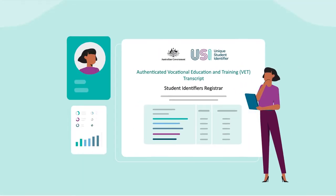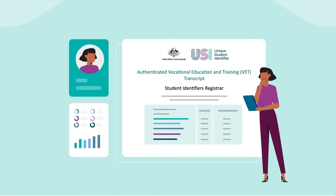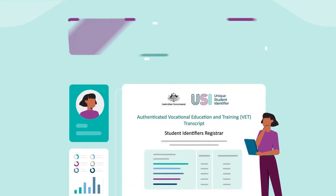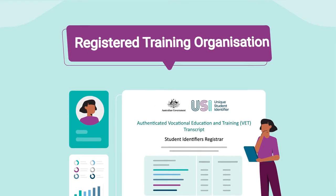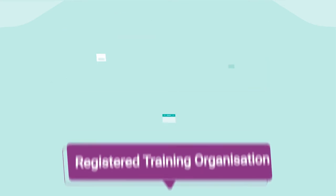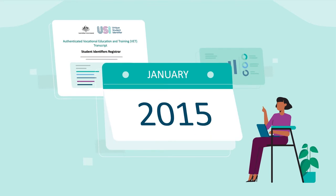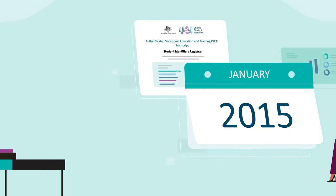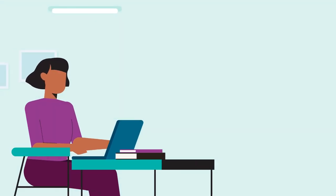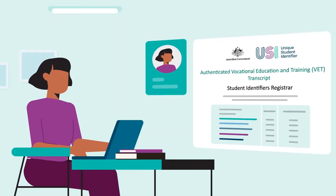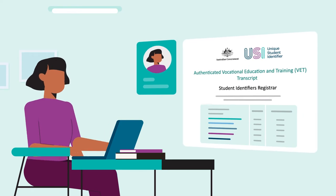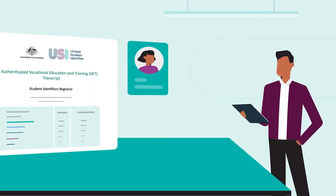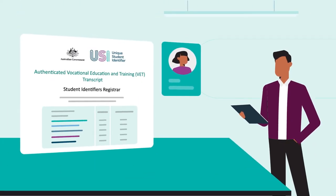A VET transcript collates all your nationally recognised training outcomes issued by a Registered Training Organisation, or RTO, since January 2015 into a single online record. A USI account allows you to access your VET transcript, or to set permission for a Registered Training Organisation to view your transcript.